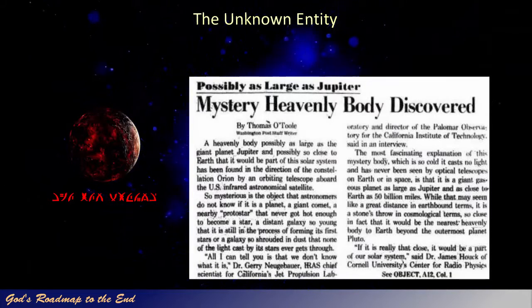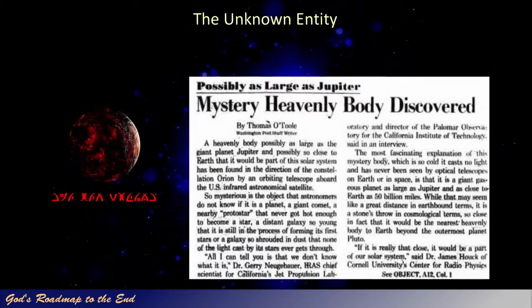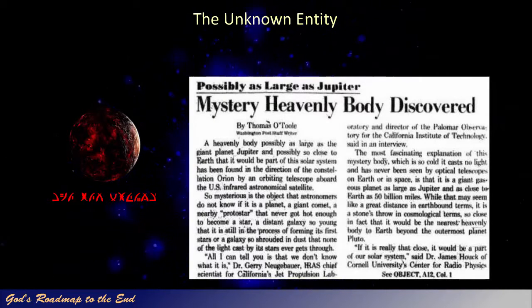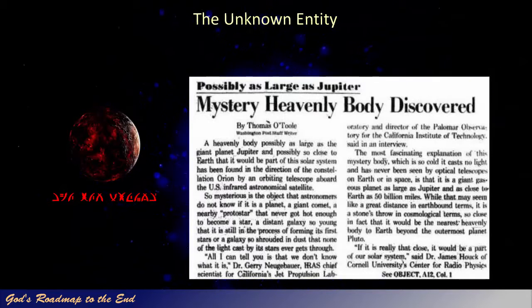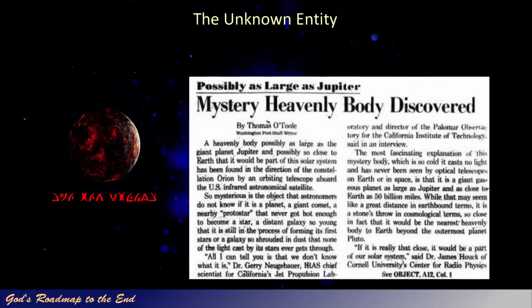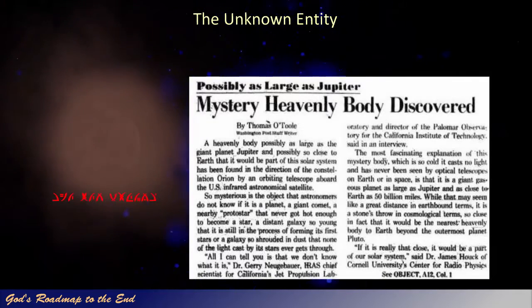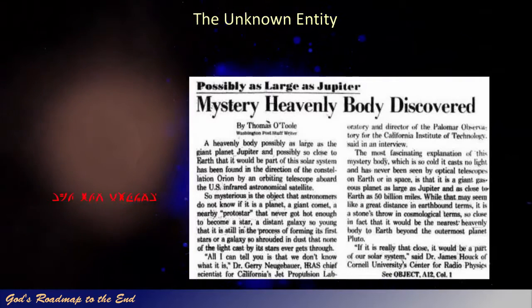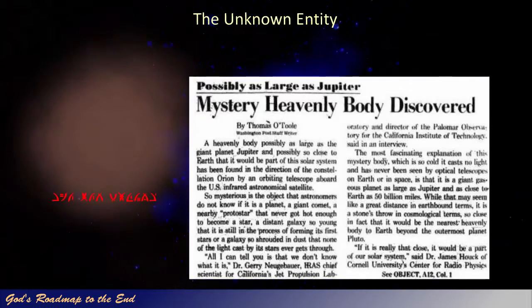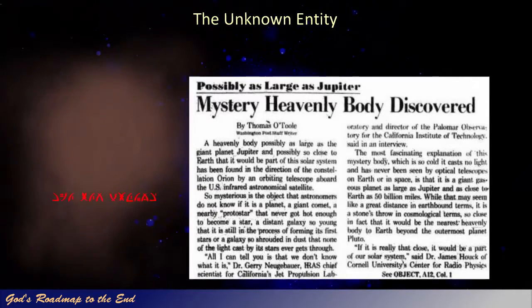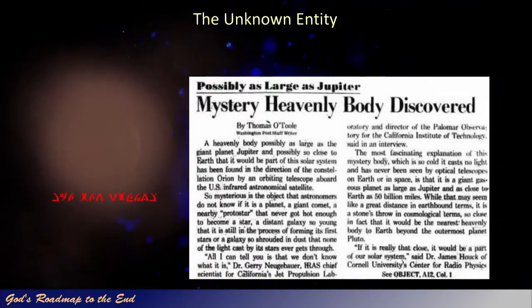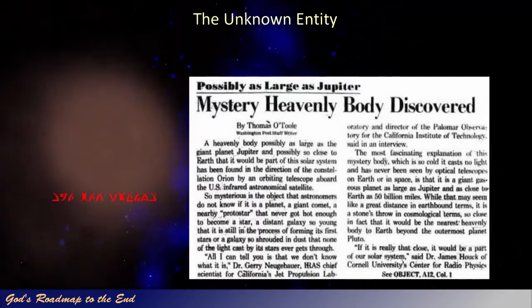This was reported in the Washington Post. The article describes the discovery of a planet or planetary system that could possibly be part of our solar system. It was discovered by a telescope on the United States infrared astronomical satellite. It is described as extremely cold, and those who discovered it could not tell what exactly it was, as it was apparently shrouded in a dense cloud of dust. This entity reflects no light and cannot be viewed with any optical telescopes. It describes the object as a possible gas giant that could be as large as Jupiter. In 1983, it was estimated to be about 50 billion miles away from Earth.